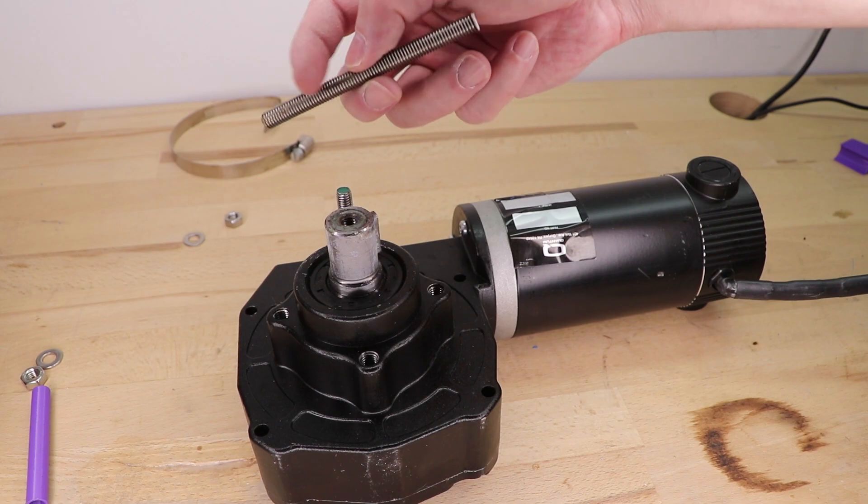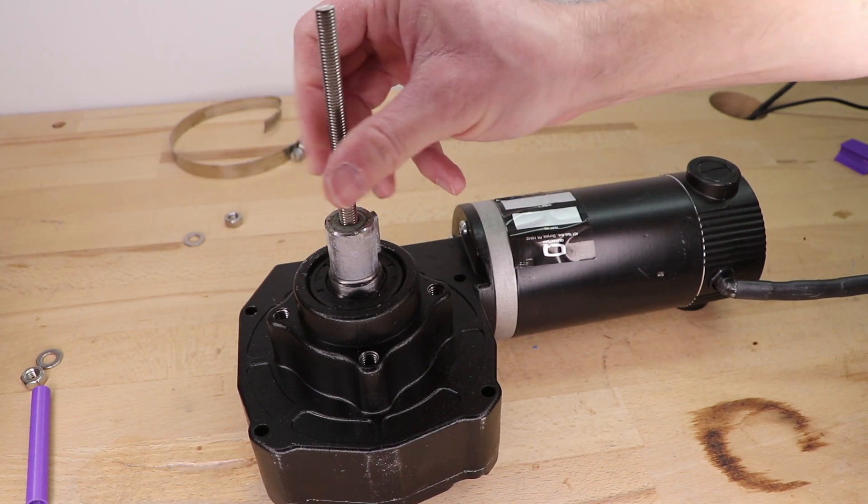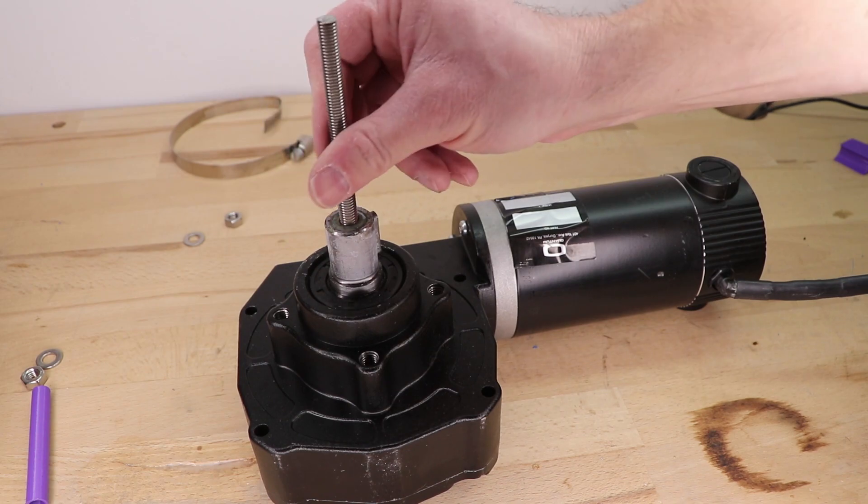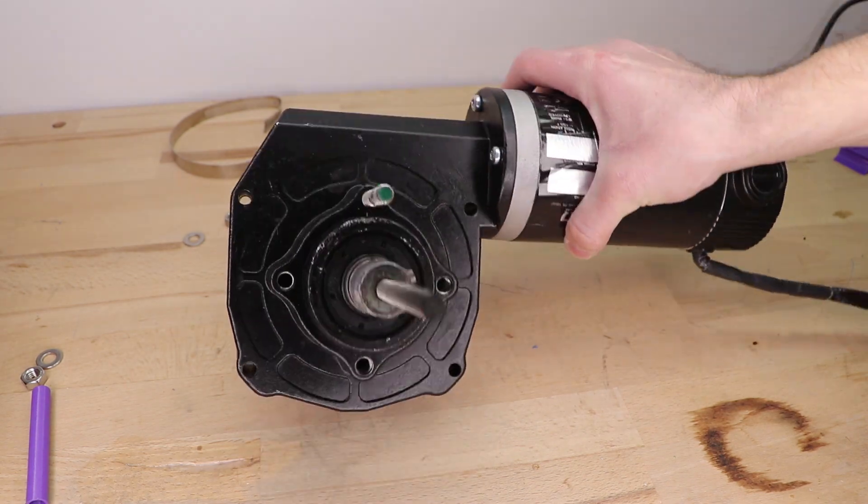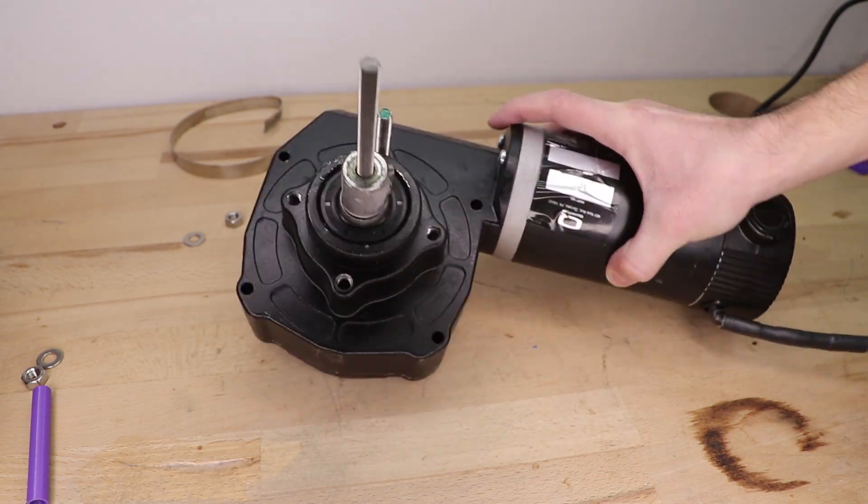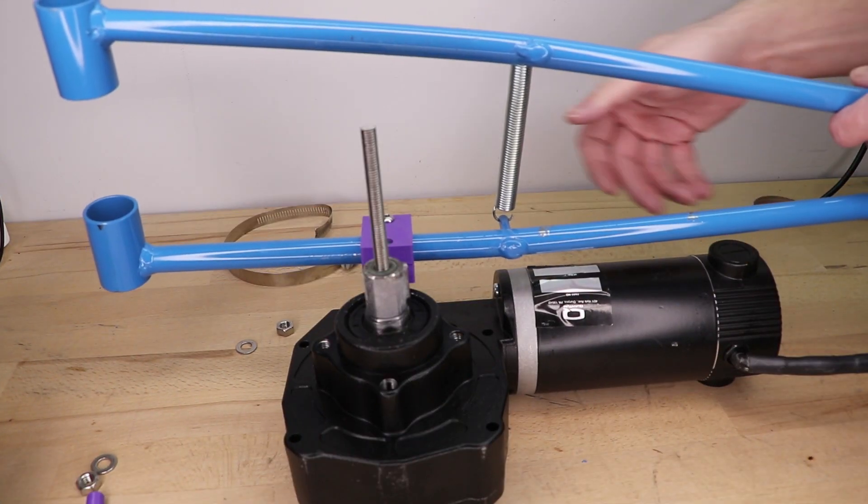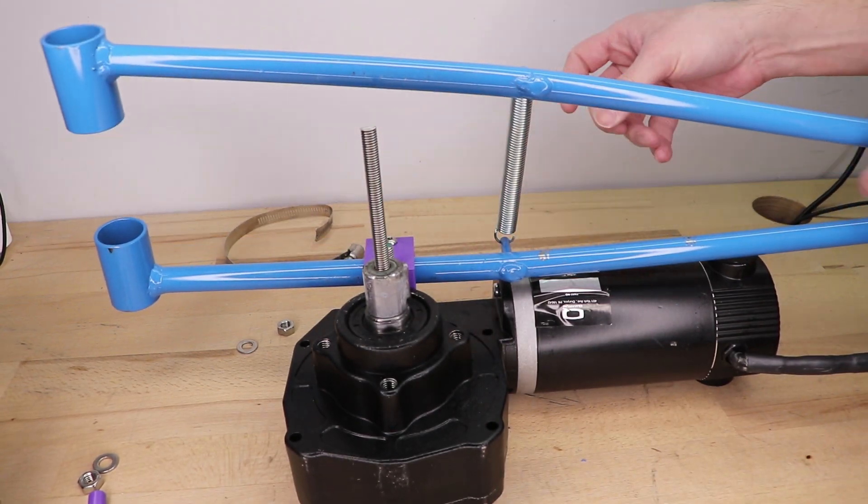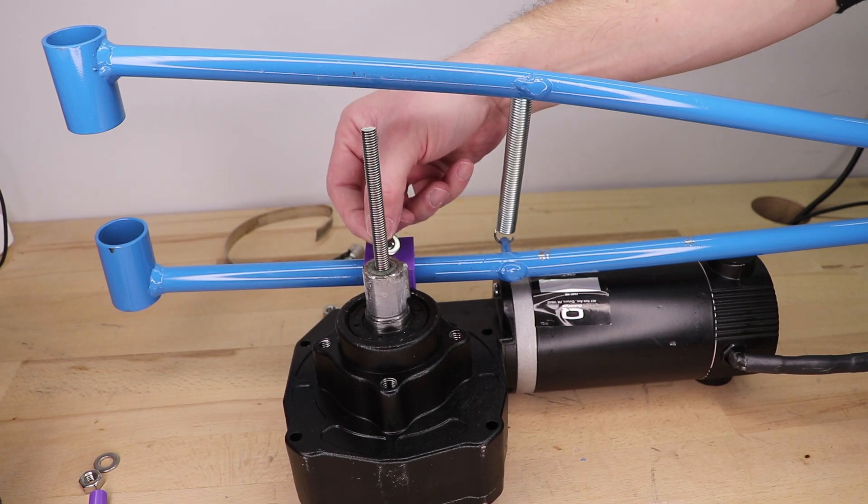Then I screwed in the M8 threaded rod to hold down the wheels. And also for the motor mount, they are both M8s. Then I attached the tow bar to the motor and secured both with a washer and an M8 nut.